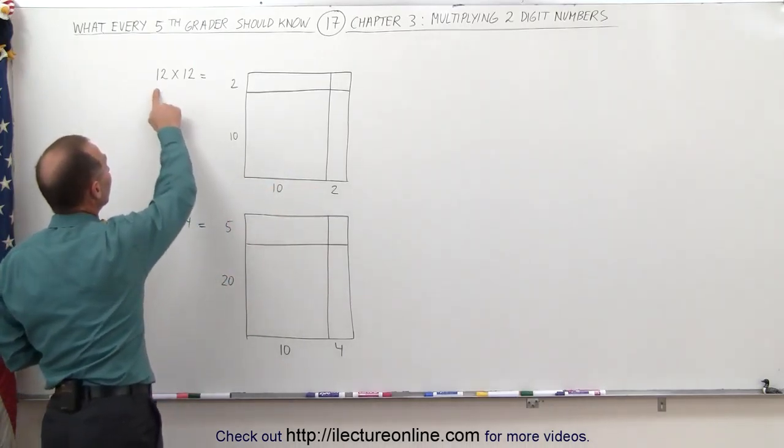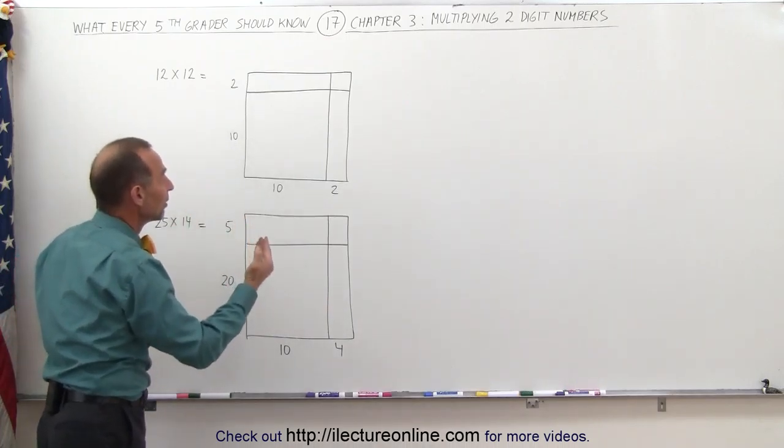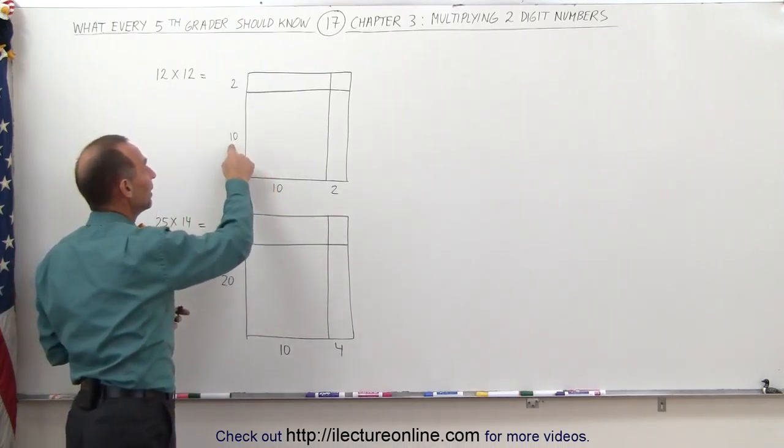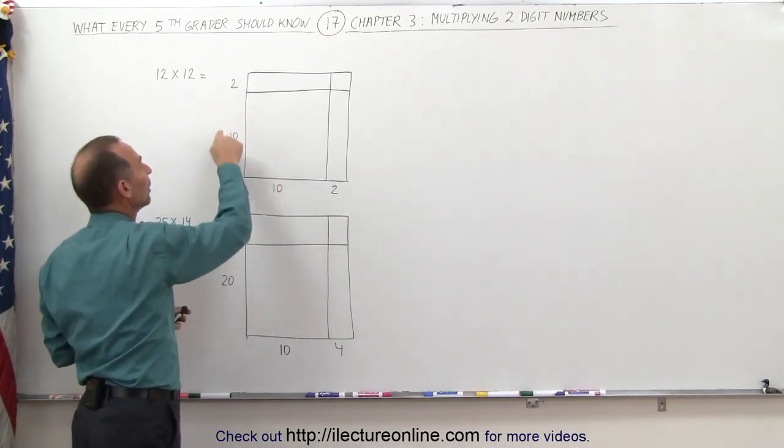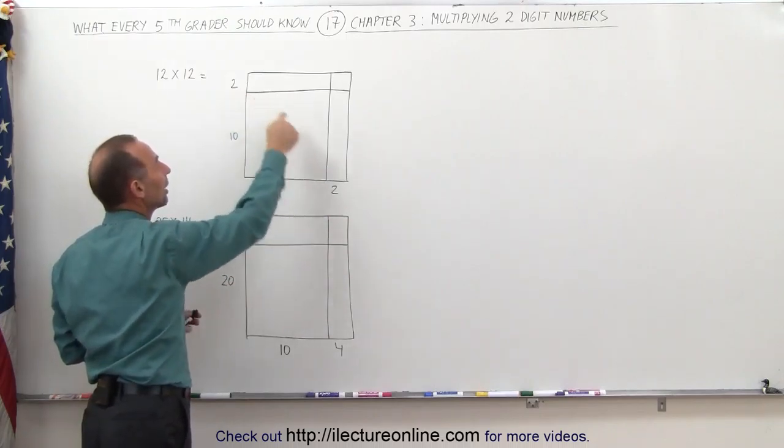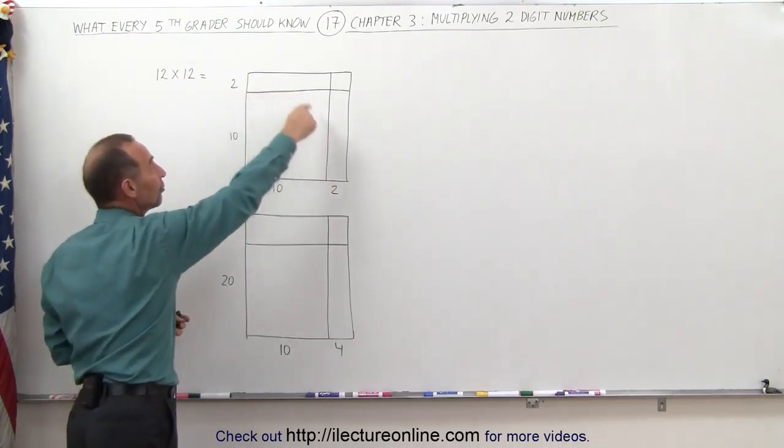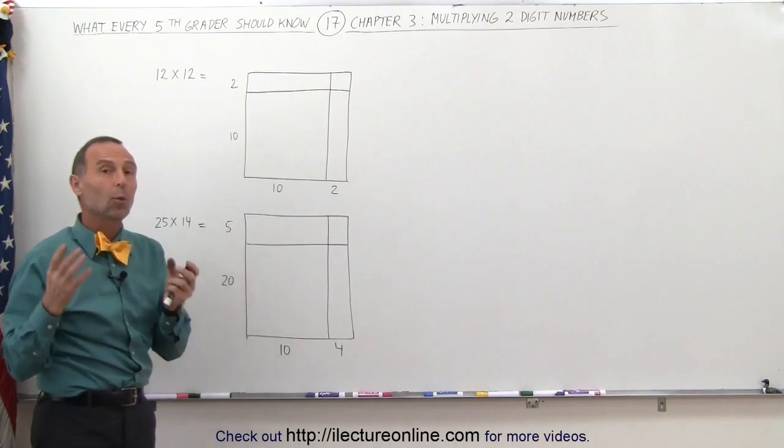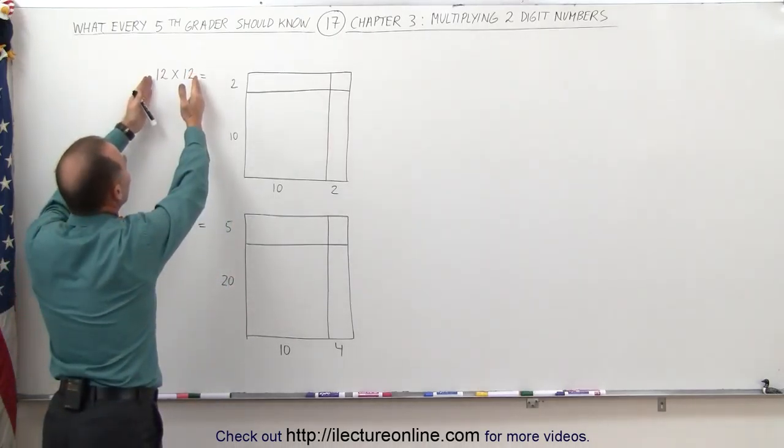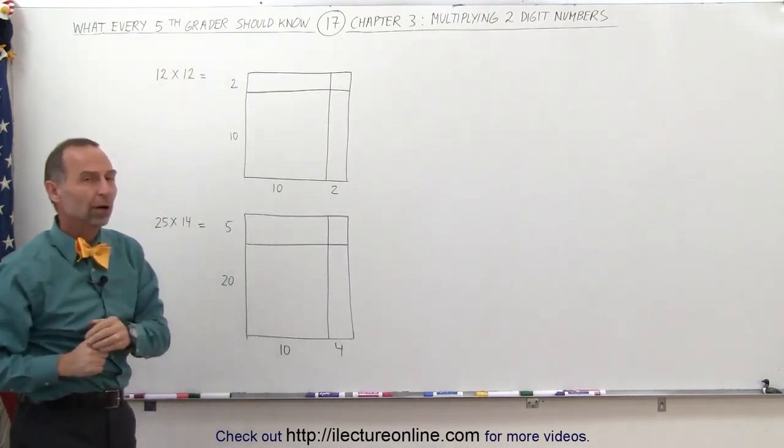When we multiply 12 times 12, it's the same thing as multiplying 10 times 10, 10 times 2, 10 times 2, and 2 times 2. In other words, each of these four sections represents one of the four multiplications enclosed in multiplying 12 by 12.